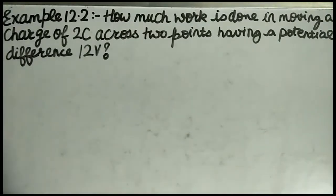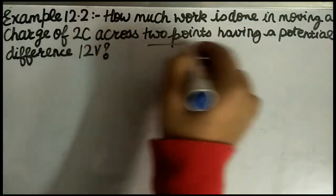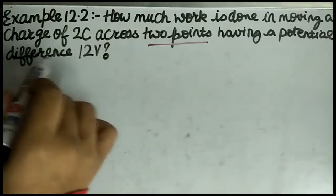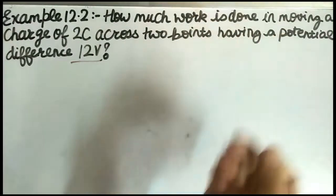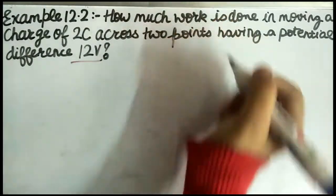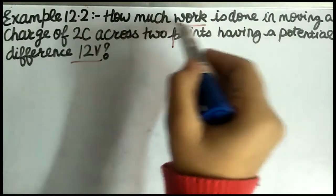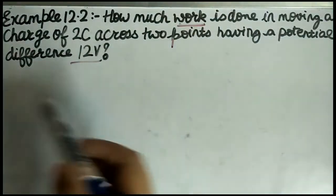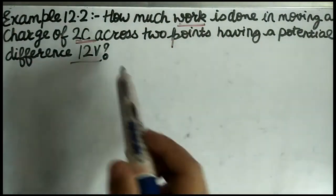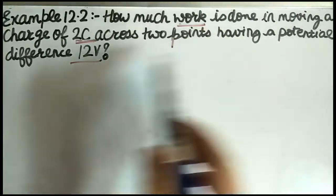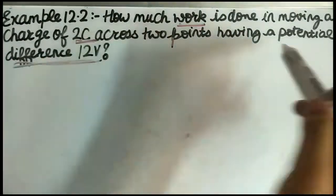Example 12.2: How much work is done in moving a charge of 2 coulomb across two points having a potential difference of 12 volt? The main points: we need to find work done, charge is 2 coulomb, and potential difference is 12 volt.